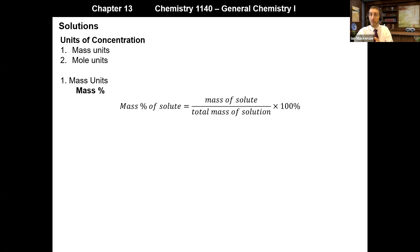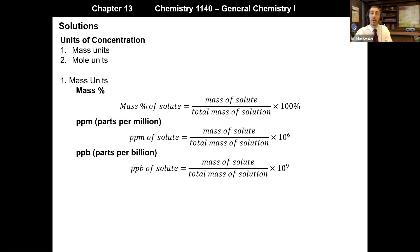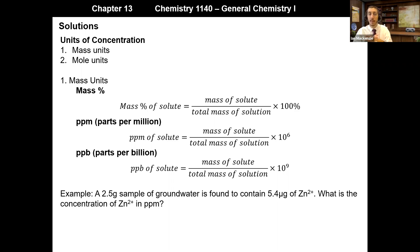It's the mass of the solute divided by the total mass of the solution times 100%. We also have two other common ones. PPM, known as parts per million, is simply the mass of the solute divided by the total mass of the solution, multiplied by 1 million. Parts per billion is used for extremely dilute solutions: mass of solute divided by total mass of solution times 10 to the ninth, or 1 billion. Let's make some notes on these three mass units and do a brief example.